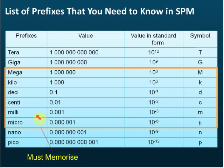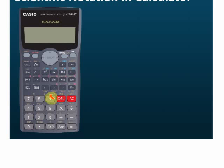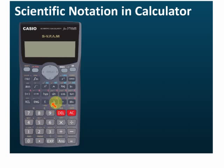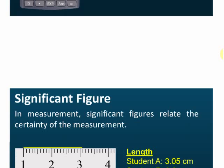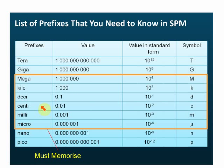If memorizing is still too difficult, another solution is to buy this calculator. You can see it has tera, giga, mega, kilo, milli, micro, nano, and pico built in. However, one important thing to note: inside this calculator there is no desi and centi. So even if you have this calculator, you still need to memorize desi and centi.